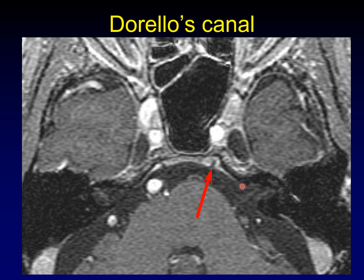Another canal that's really important relative to the clivus is Dorello's canal. This is the fibrous sheath through which the sixth cranial nerve runs. The sixth cranial nerve comes from the pontomedullary junction, crosses the prepontine cistern, dives into Dorello's canal, and runs up the back of the clivus where it is exposed to any clival pathology. Any mass or infection in the clivus can affect the sixth cranial nerve as it runs through Dorello's canal along the back of the clivus.